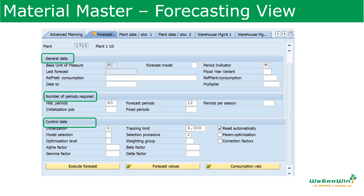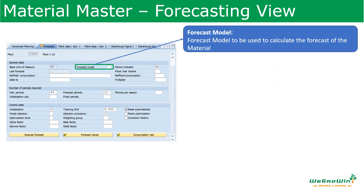In the forecasting view we have details like general data where we select the forecast model, what is the last forecast, what are the reference materials, and those kinds of things. Then we have a section on number of periods required, and next we have the control data parameters — whatever we need to carry out the forecast. The forecast model calculates the requirement to forecast for the material. The forecast model covers known models such as a constant model, seasonal model, or anything similar — this is what kind of model we are going to use.